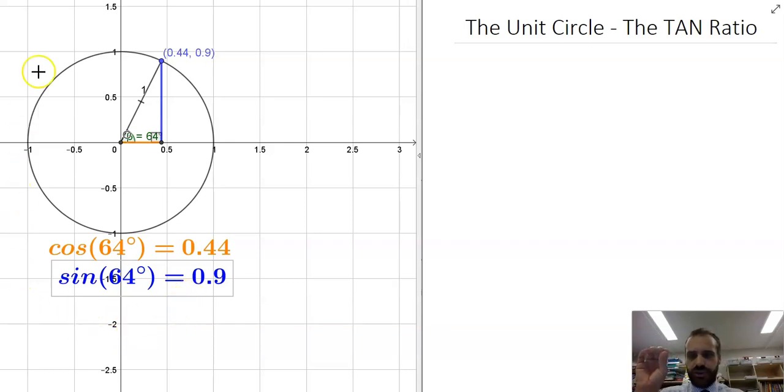In a previous video I introduced you to the unit circle and we decided that this point on the unit circle is equal to cos theta for the x coordinate and sin theta for the y coordinate. And many of you may have finished watching that video saying, well we did cos, we did sin, what about tan?